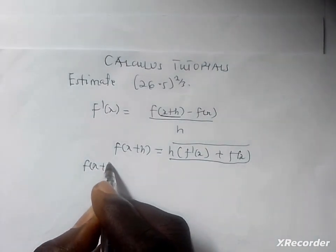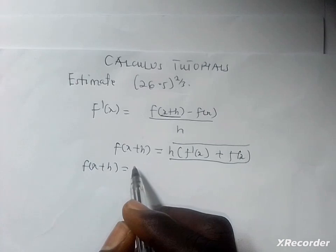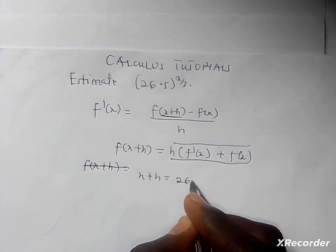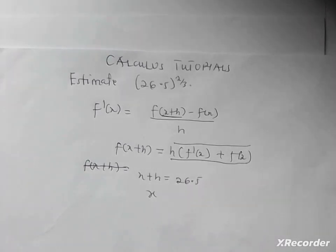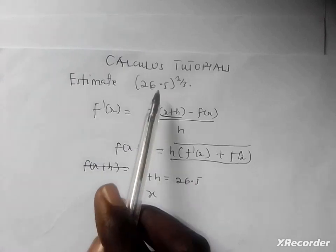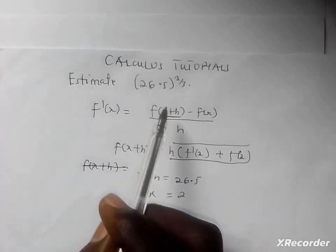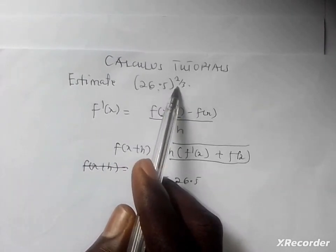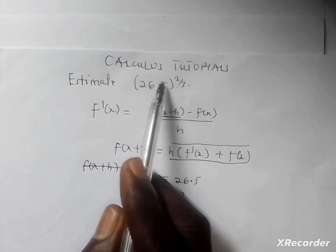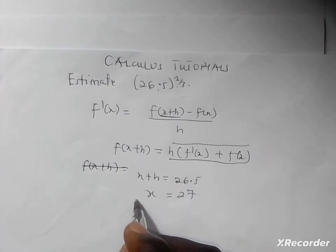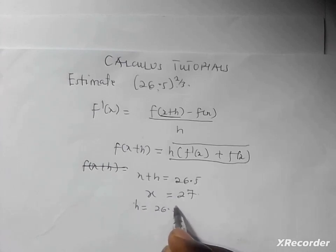Our x+h is simply equal to 26.5. I'm going to assume an x that should give a possible value for this that is a whole number, and you can see it will be 27. So that's 27, and when you put it here you get 9. From here I'm going to have my h: x+h = 26.5, x = 27, therefore my change h is simply equal to 26.5 minus 27, and that will give us negative 0.5.